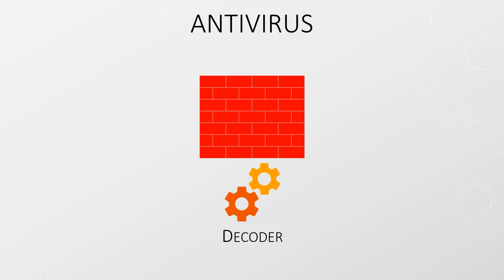An anti-virus profile protects endpoints within your network from virus-related threats from outside the network. It does this using a stream-based malware prevention engine. This basically means that the firewall looks at a stream of traffic and uses a decoder to understand the traffic type and check it for viruses, trojans, worms, and so on. These decoders can look at FTP, HTTP, HTTP2, IMAP, POP3, SMB, and SMTP. I'd like to stress that while this aims to stop viruses before they reach the endpoint, this is not a replacement for installing antivirus software on your endpoints.